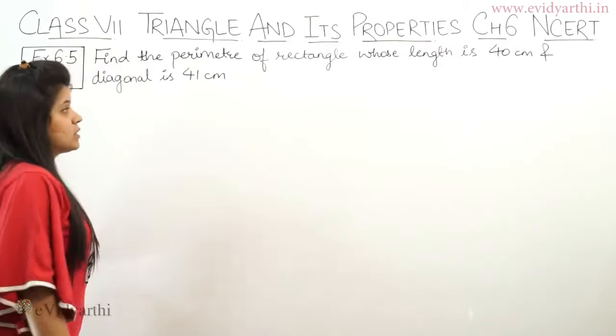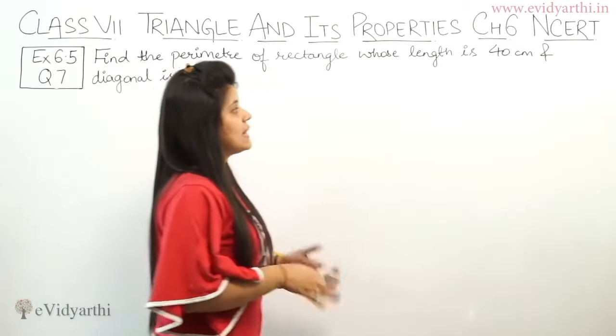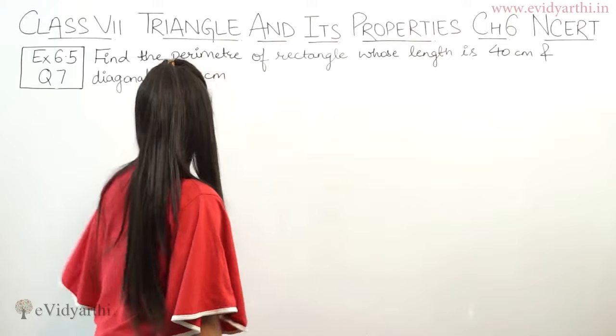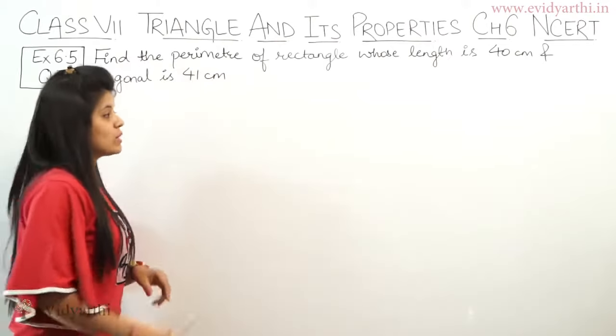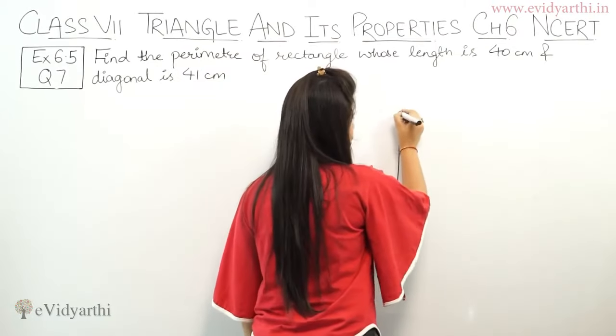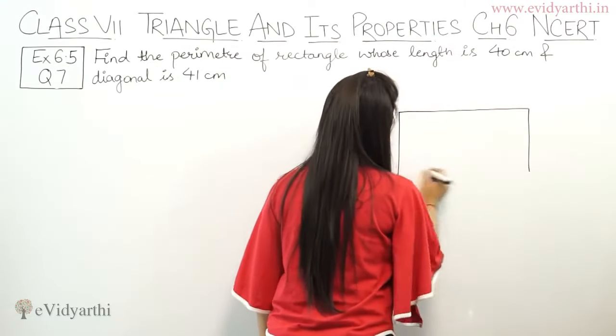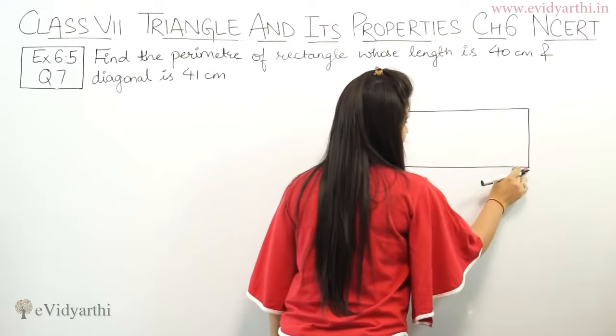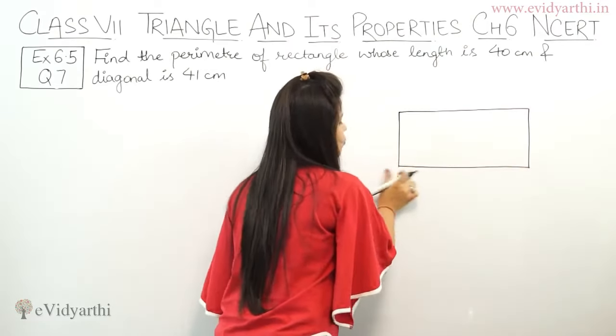Find the perimeter of rectangle whose length is 40 cm and diagonal is 41 cm. So you have to find the perimeter of rectangle. First we draw a rectangle. Suppose this is our rectangle. Now you have to find its perimeter.